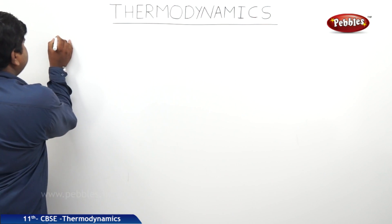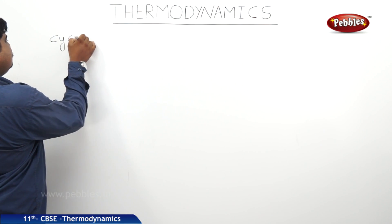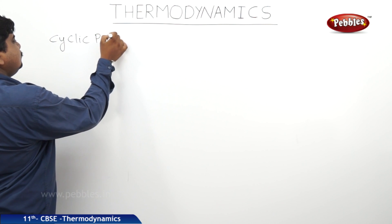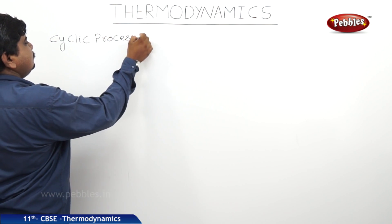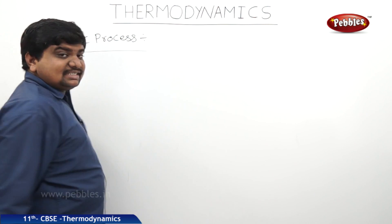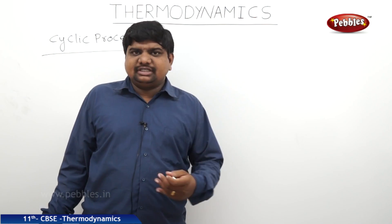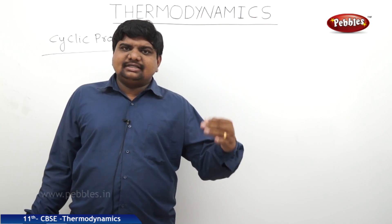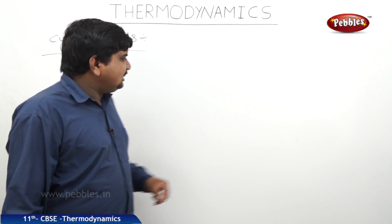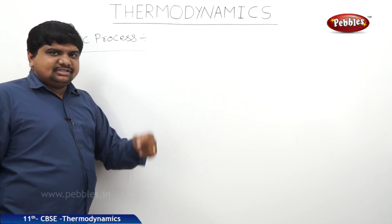The next one is cyclic process. A cycle wheel which repeats its motion and comes to the initial point after repeating one complete revolution. Like that, cyclic process is also the same.